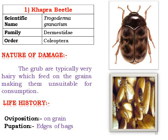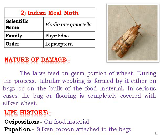The Indian meal moth, Plodia interpunctella, is from Order Lepidoptera and is similar in degree to the Angoumois grain moth. It looks like a very small, minor moth. The larvae feed on the germ portion of the grain. Tubular webbing is formed on the bags or on the bulk of food material. In serious cases, bags of flour are completely covered with a silken sheet. Pupation occurs in silken cocoons attached to the bags, mostly at the margins.